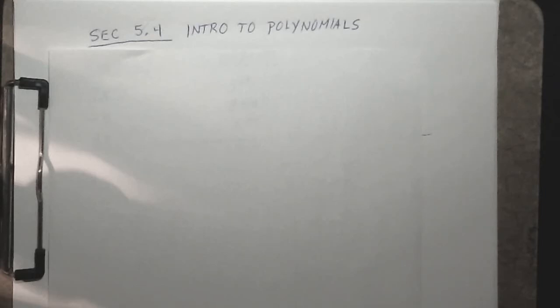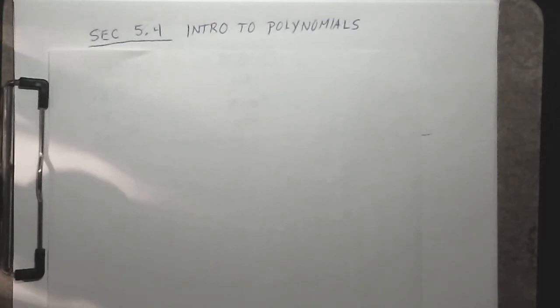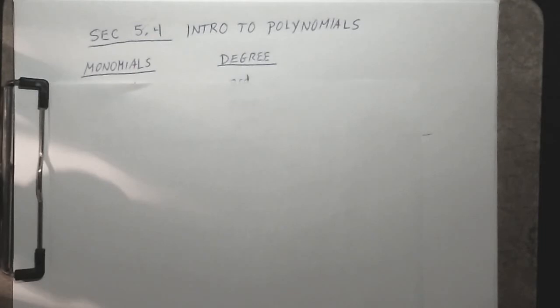Hello, welcome back everybody. Hopefully everybody is healthy. Section 5.4 is going to introduce us to polynomials and we're also going to begin to add and subtract these constructs. First of all, let's define some polynomials. Monomials we've already looked at a couple days ago — monomials are just one-term variable or algebraic expressions.